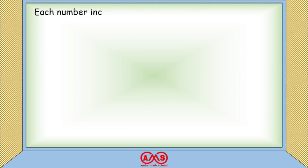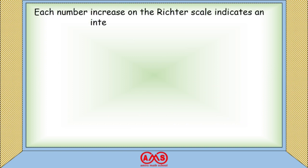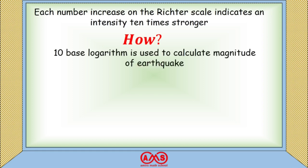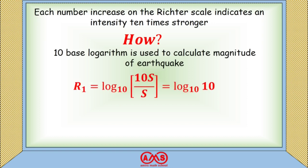Each number of increase on the Richter scale indicates an intensity 10 times stronger. That is because base-10 logarithm is used to calculate the magnitude. For R₁, we have log₁₀(10S / S) = log₁₀(10) = 1, where the earthquake is 10 times the standard earthquake.